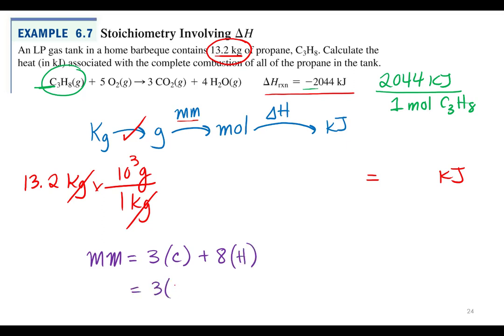If we look on the periodic table, carbon is 12.01 grams per mole plus eight times 1.008 grams per mole for hydrogen. If we throw that into our calculator, we get 44.09 grams per mole.